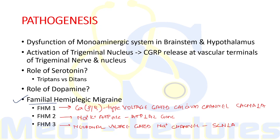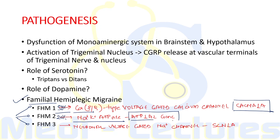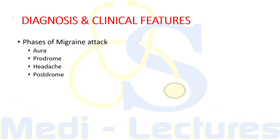Some cases of migraine are familial, known as familial hemiplegic migraine (FHM), due to defects in ion channels suggesting alterations in membrane excitability. There are three types: FHM type 1 — responsible for 50% of all FHM — is due to a Ca-Pq type voltage-gated calcium channel gene CACNA1A. Type 2 accounts for 20% and is due to mutations in sodium-potassium ATPase gene ATP1A2. FHM3 is due to a mutation in neuronal voltage-gated sodium channel gene SCN1A.